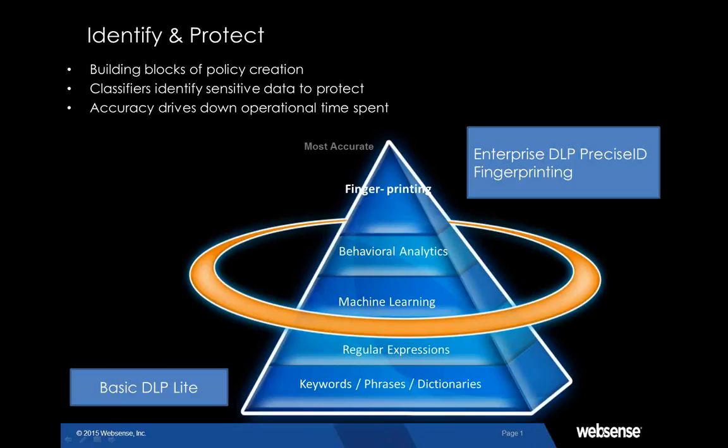In some organizations, you cannot define all the processes, and data classification can be a constraint. Sometimes customers have no full understanding of all data to be protected. This is a way to start with a DLP solution addressing some security needs. In this first slide you see the different approaches you can have to DLP, starting from the base — a very basic DLP, what we call DLP Light — which is what you find in UTM, firewall solutions, and basic filtering solutions.